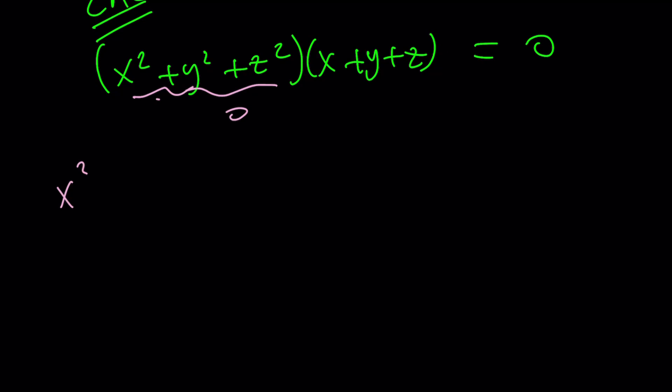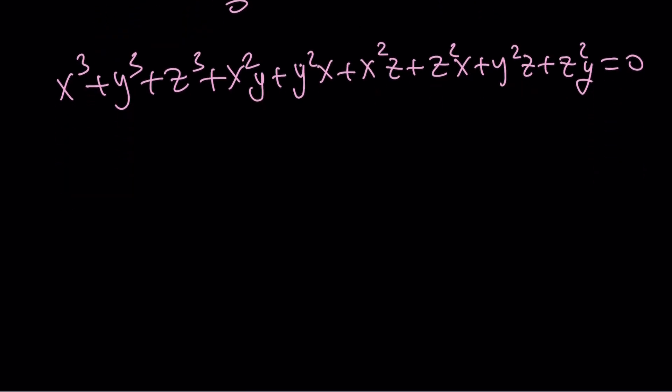We're going to get, when we distribute, we're going to get something like x³, y³, z³. And then, we're going to get something like this: x²y + y²x + x²z + z²x + z²y + y²z. Okay. And that's equal to 0. Now, be careful. We know this. This is equal to -1.